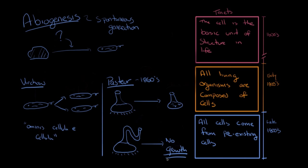This is the story of cell theory — how scientists over a period of 200 years discovered the three major tenets that are really the foundation of much of modern biology: the cell is the basic unit of structure in life; all living organisms are composed of cells; and all cells come from pre-existing cells.